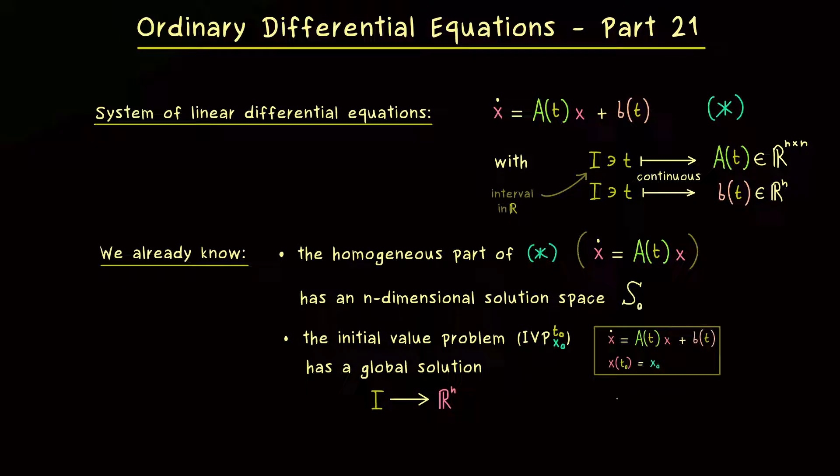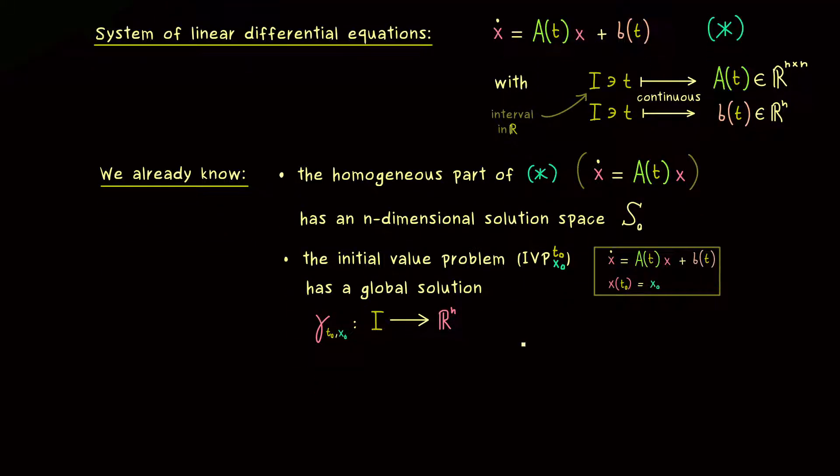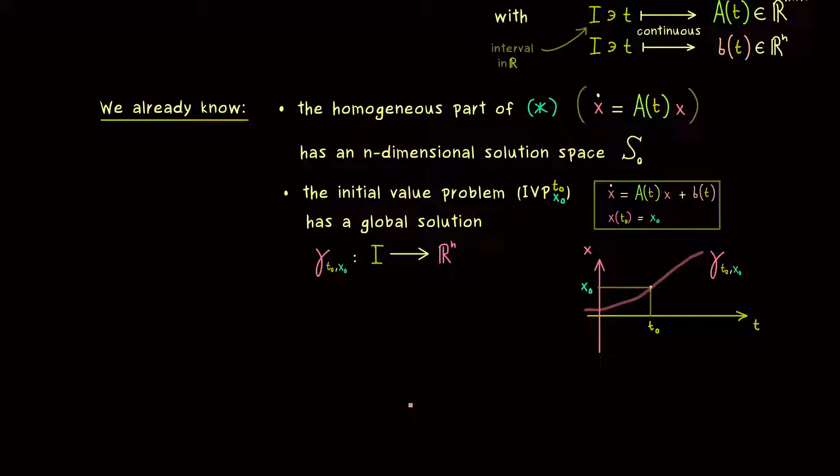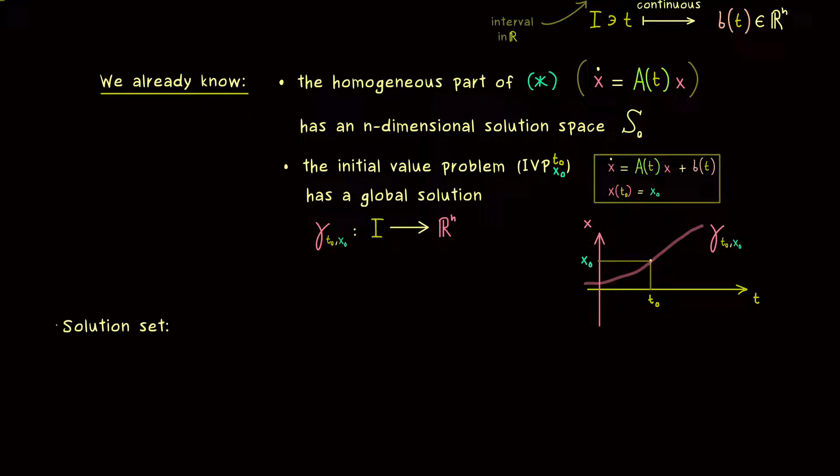And obviously the codomain has to be ℝⁿ. Okay, and now we need a good name for this unique solution and I want to call it gamma with two indices. Namely I write t₀ and x₀ in the index. It's not so important, but just a reminder that we have chosen this initial value problem for our global solution. So we can definitely use the existence result we have from the Picard-Lindelöf theorem. We can visualize that in the tx plane. So here we have t₀ and x₀. And now we have our unique solution gamma that goes through this point. And now the idea is to use this one solution we have for the ODE to get all solutions together.